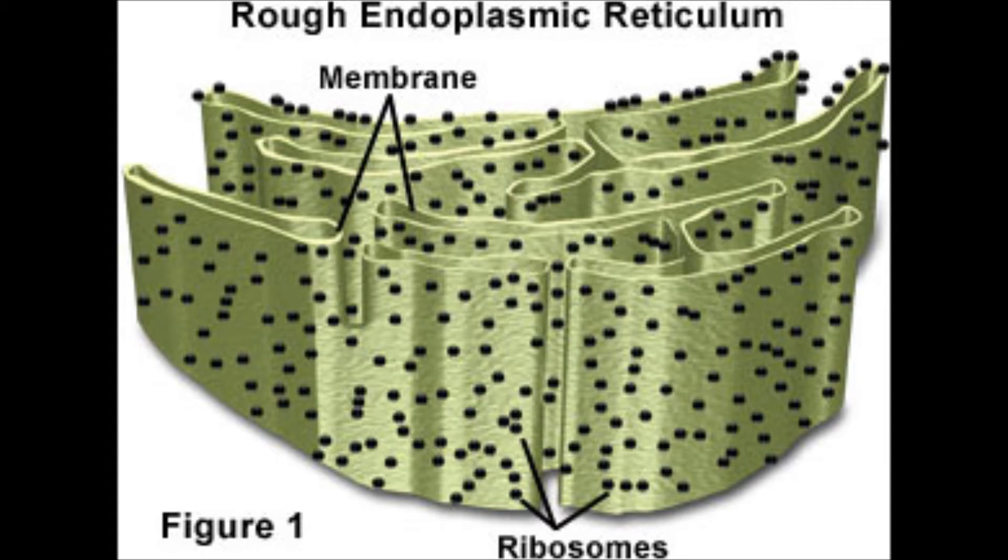Rough endoplasmic reticulum packages proteins to be used. Ribosomes contain amino acid chains. This organelle's not to be abused. The surface is bumpy on the outside. Vesicles detach and move to the Golgi apparatus or cell membrane. They carry the proteins they send through.